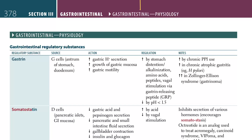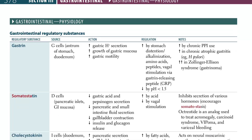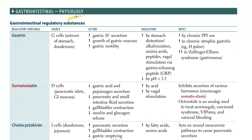Let's talk about physiology - gastrointestinal regulatory substances. Starting with gastrin: the source is G cells - G for gastrin, G for the cells. Most importantly, where are they present? They are present in the antrum of the stomach and the duodenum.